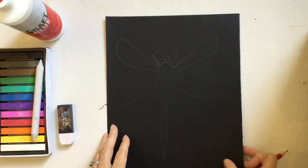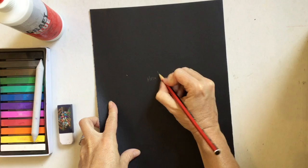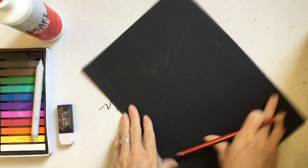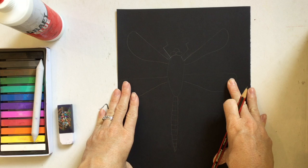The next step, first of all, I want you to write your name on the back. Very important. Then I want you to decide whether you want your dragonfly in portrait style or landscape. Either one. Now I've decided to draw mine in portrait.